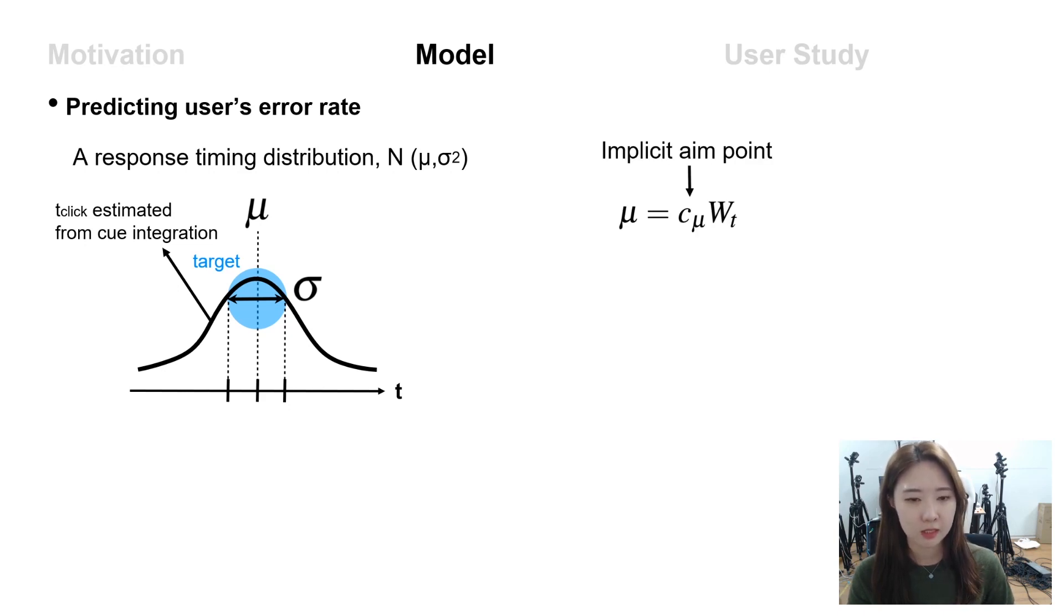At this distribution, mu means the expected click timing and can be written like this formula. C mu means user's implicit aim point.